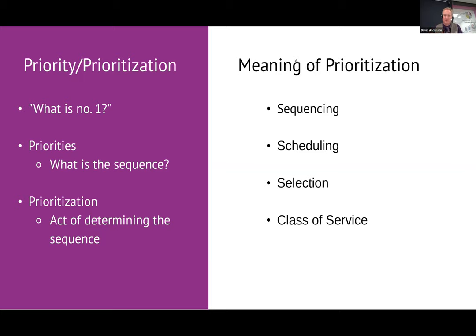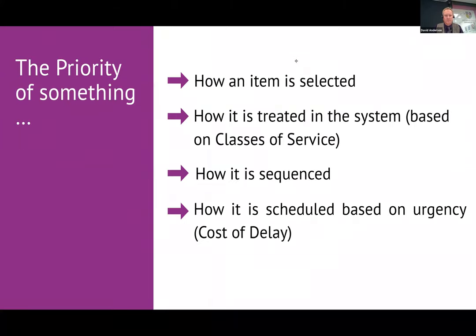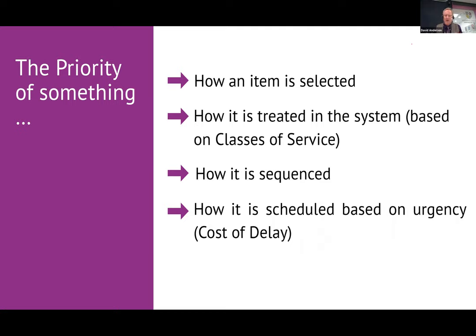We have specific solutions for each of these four different types of things people use these words for. How an item is selected, what order it should be done in, when it should be started — that tends to be based on urgency and cost of delay. If we delay something by a week or a month, what's the impact? Relative to other things, which one should we choose if we can only do one right now? We need to answer these questions to adequately prioritize something.